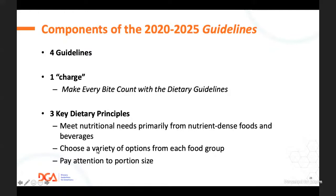The three dietary principles underlying the guidelines are: meeting nutritional needs primarily through nutrient-dense foods; choosing a variety of foods; and paying attention to portion size. As a dietitian, this harkens back to balance, variety, and moderation that we've been talking about for decades.